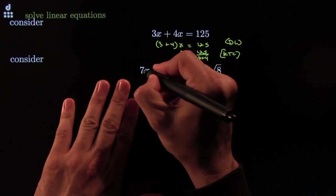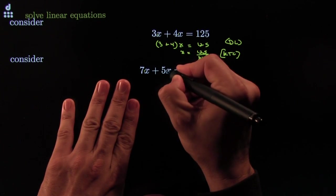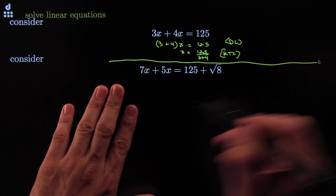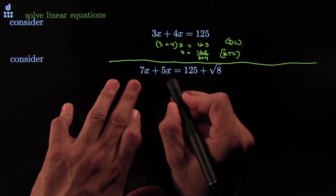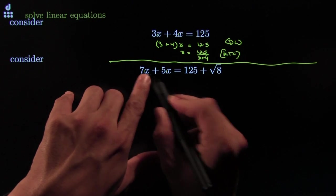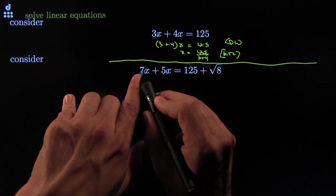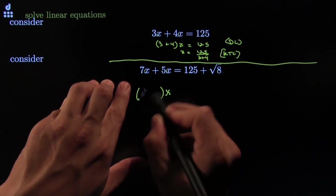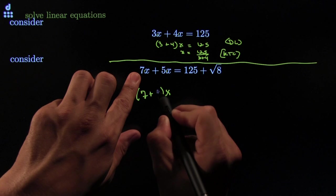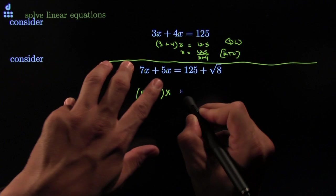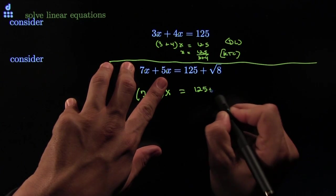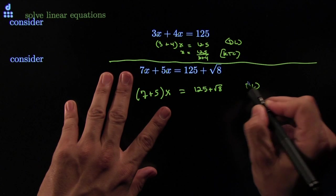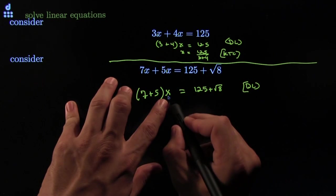Take this example. You can say, whoa, it looks like someone distributed an x. So maybe I can undistribute it — if I undistribute it, there would be a 7 there and a 5 there, and that would equal 125 plus the square root of 8. This, of course, is by the distributive law. It says you can factor out that x.